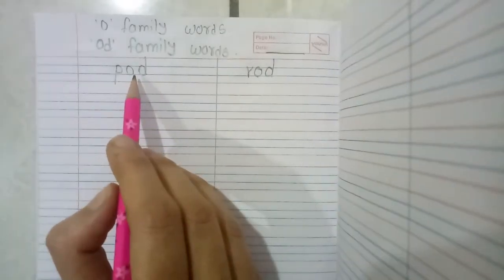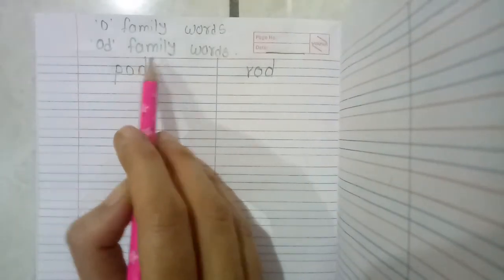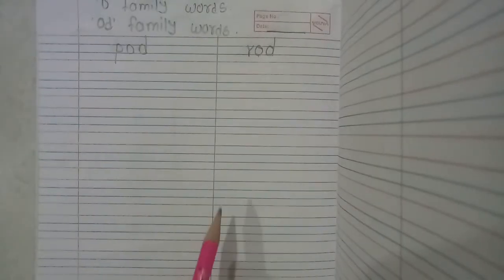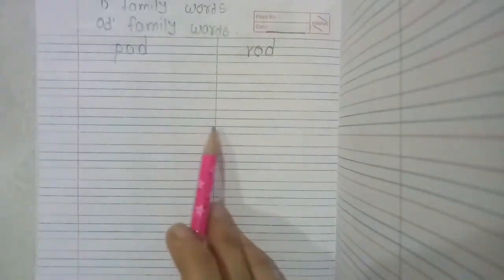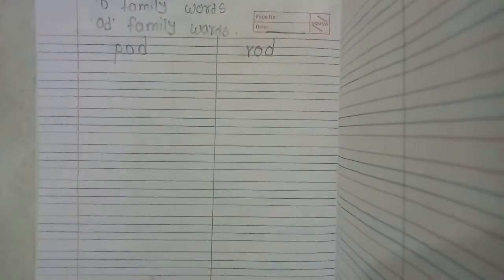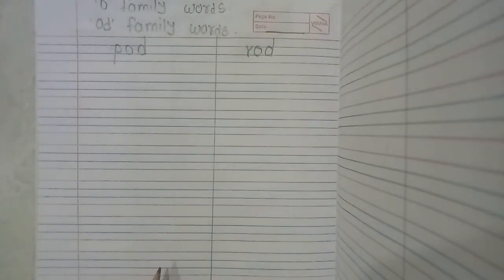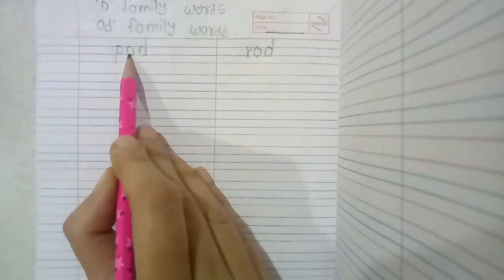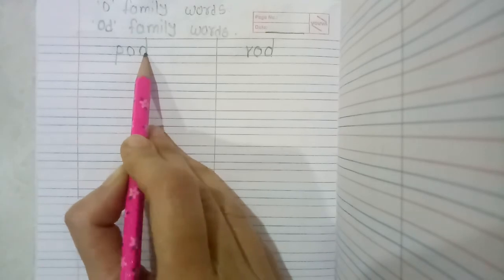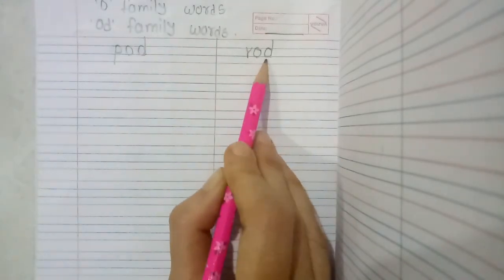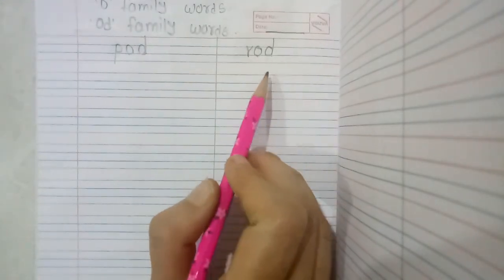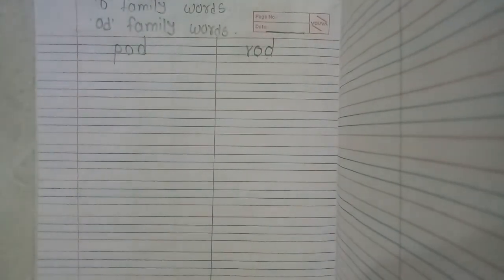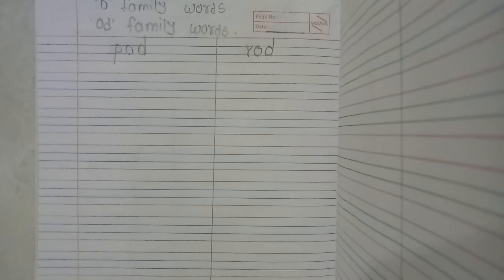Students, yeh aapko bolte bhi jana hai. Yeh words, with phonic sound, likhte bhi jana hai. Okay — P-O-D, pod, and R-O-D, road. Yeh seedha seedha aapko likhte jana hai.